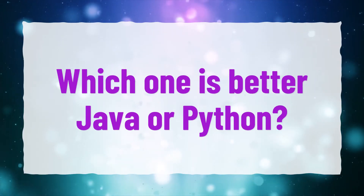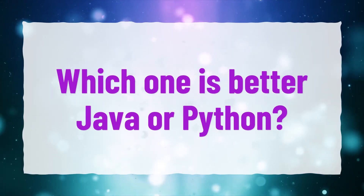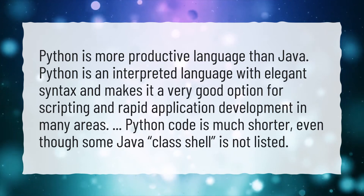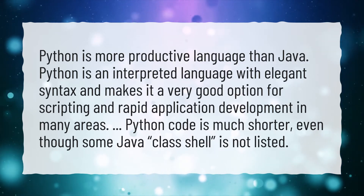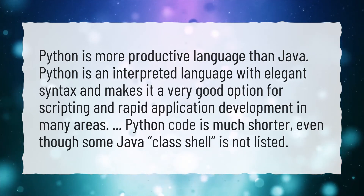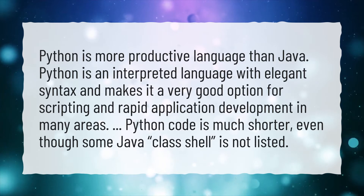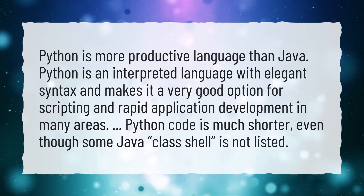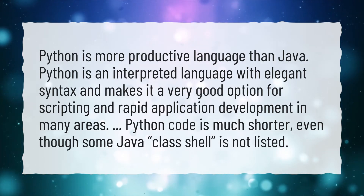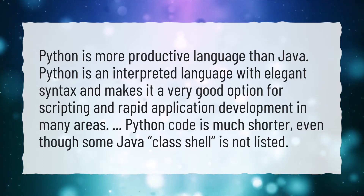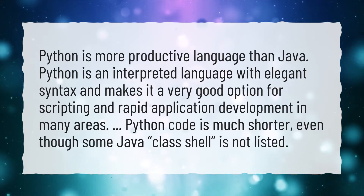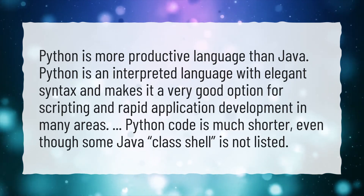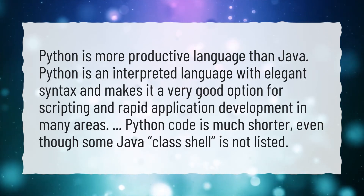Which one is better, Java or Python? Python is a more productive language than Java. Python is an interpreted language with elegant syntax and makes it a very good option for scripting and rapid application development in many areas. Python code is much shorter, even though some Java class boilerplate is not listed.